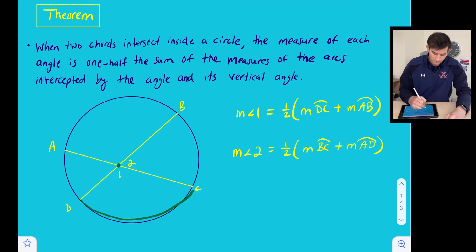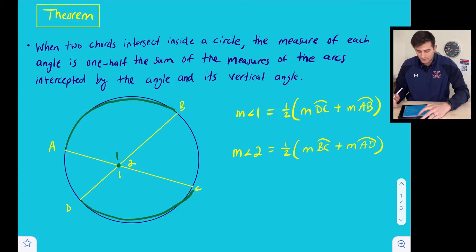So the vertical angle to angle one would be right here, and its intercepted arc is arc AB. So we would just add those two arc measures together, divide by two, and that gives us the measure of angle one.